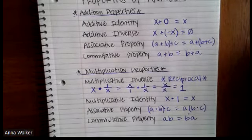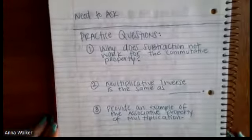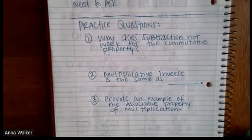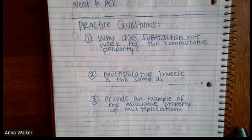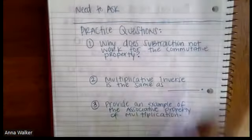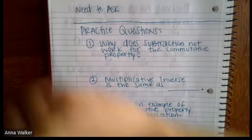If this is your second time watching the video, I'm going to show you the practice problems for this — they're pretty straightforward, so go ahead and pause and copy them down. The practice questions are: number one, why does subtraction not work for the commutative property — you could give an example; number two, multiplicative inverse is the same as finding what; and number three, provide an example of the associative property of multiplication using actual numbers. If you have any questions, please make sure you write them in your need-to-ask section. Have a great day.